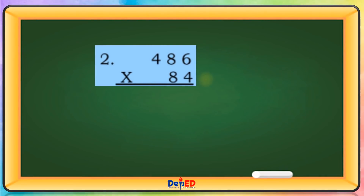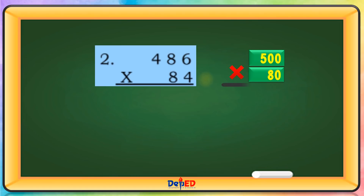486 will be rounded off to 500 and 84 will be rounded to 80. 500 times 80 — let's copy or write the three zeros. And then multiply 8 times 5 equals 40. The estimated product is 40,000.